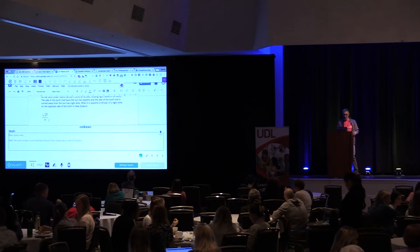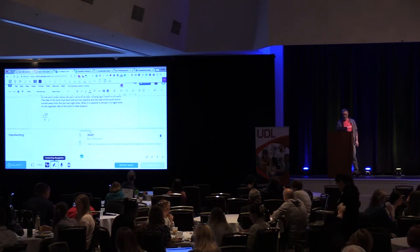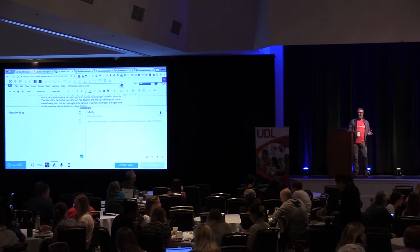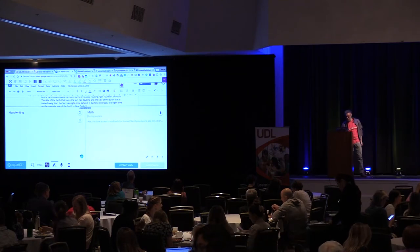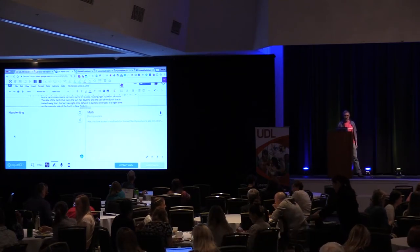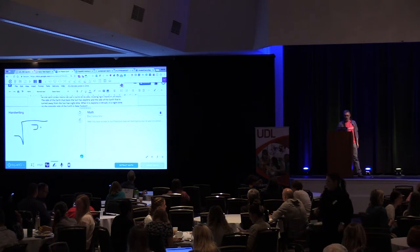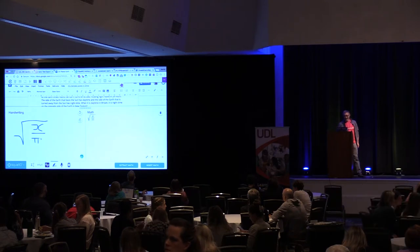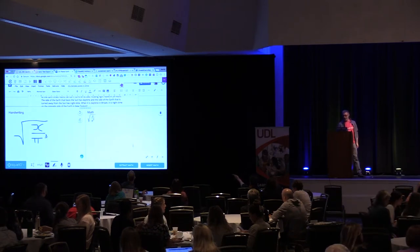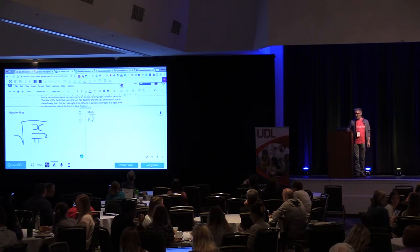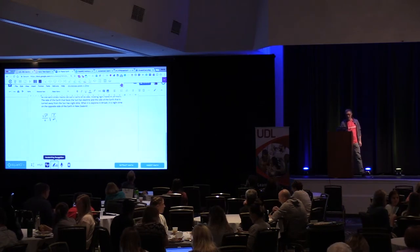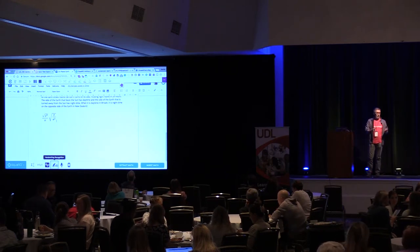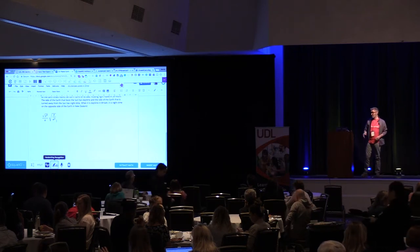I want to show the handwriting recognition. If you've got a touch screen device — I don't, so I'm going to write with my mouse. I'm not very good at writing with my mouse, so cut me some slack. But if I write in the square root of x over pi cubed, you can see that it recognizes that handwriting and just pops it into the document. If you've got a Microsoft Surface device or a touch screen Chromebook, you can just write on the surface of the screen and pop it in. It is pretty cool.